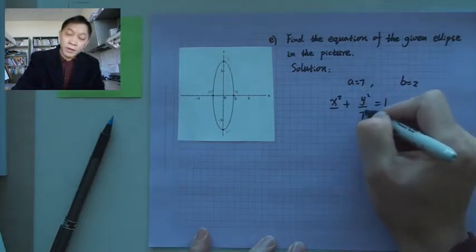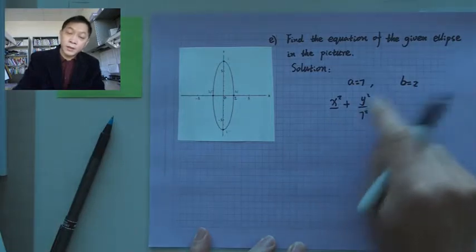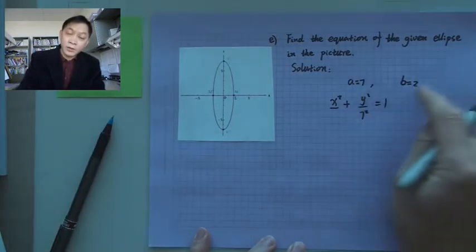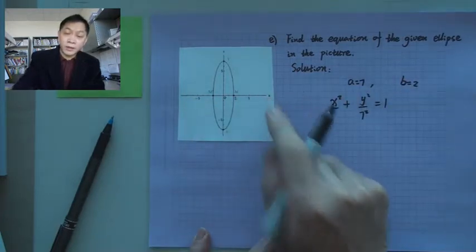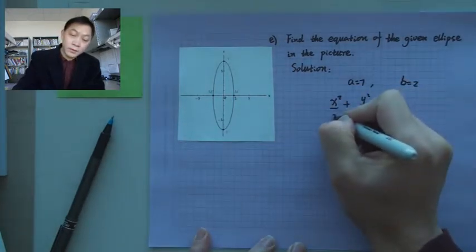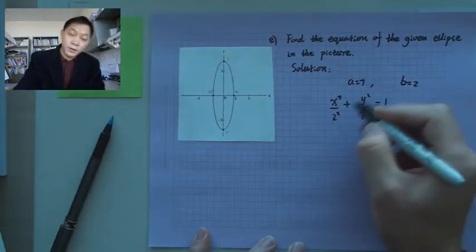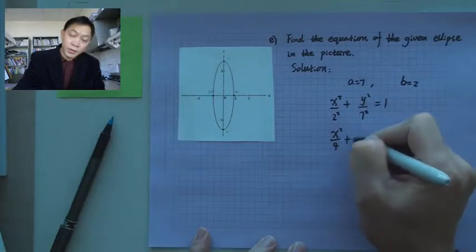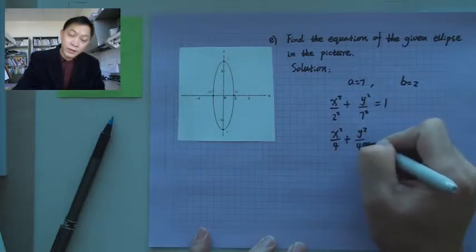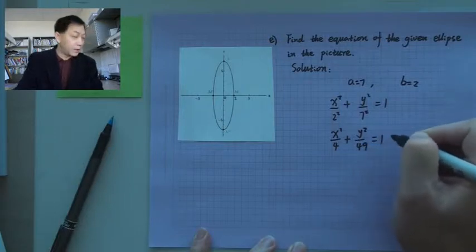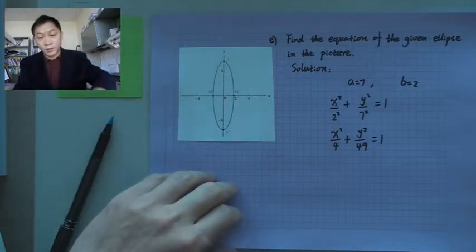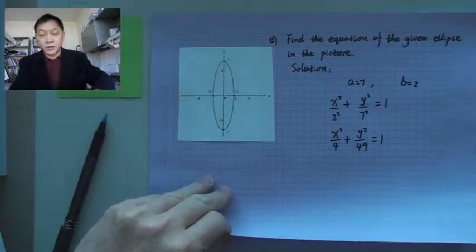So the big number, 7, goes below y. You then have 7 squared. And the smaller one — the minor axis — goes below x, so that's 2. So you have x squared over 4 plus y squared over 49 equals 1. That's this example.